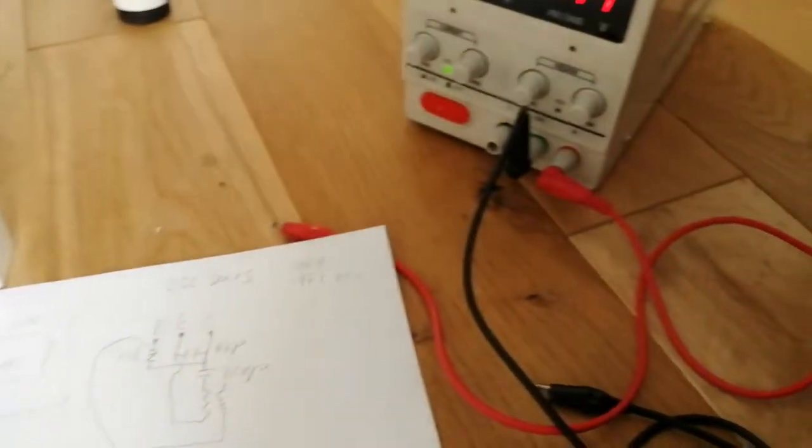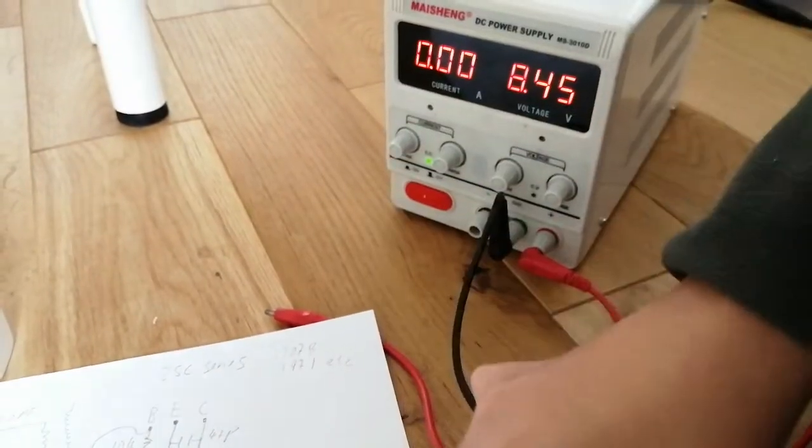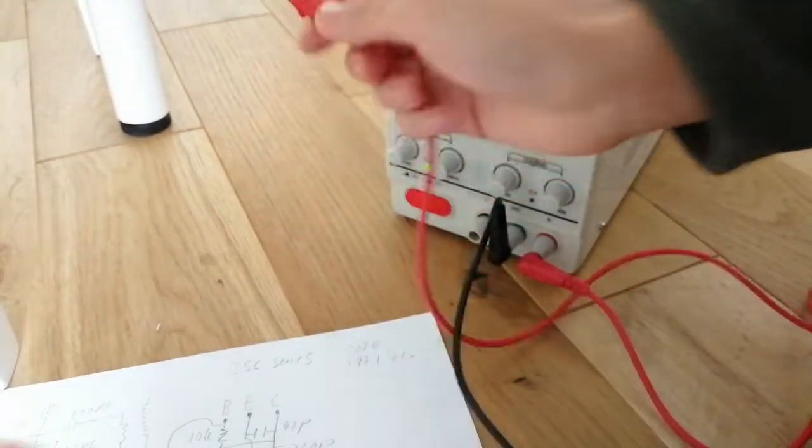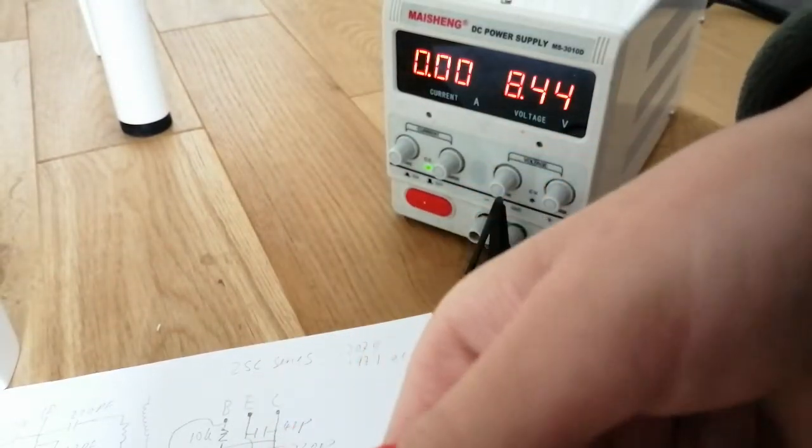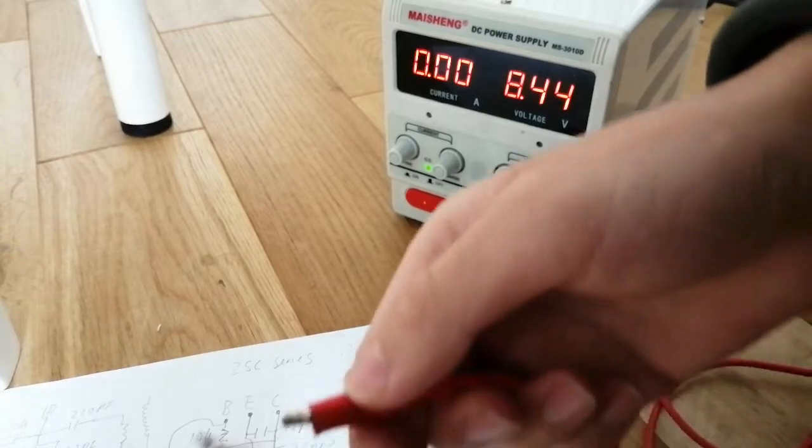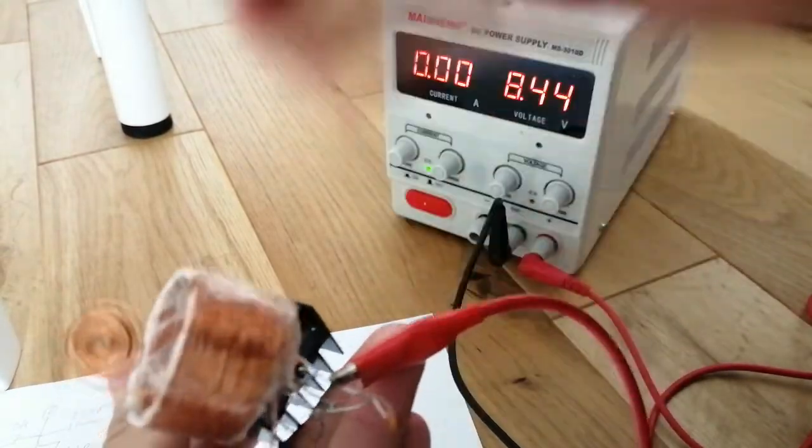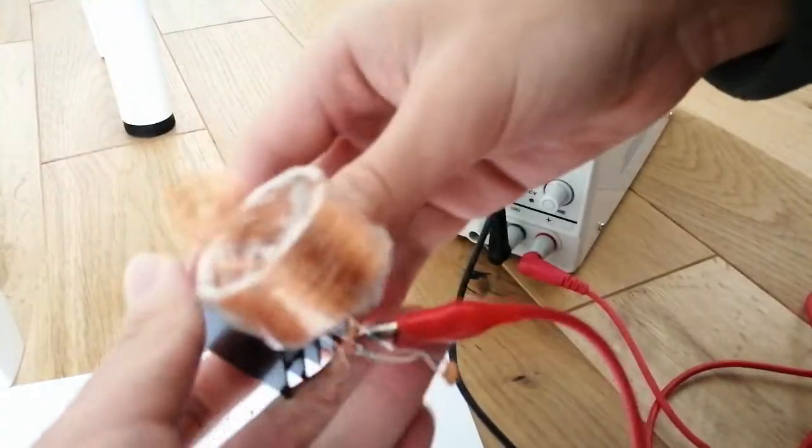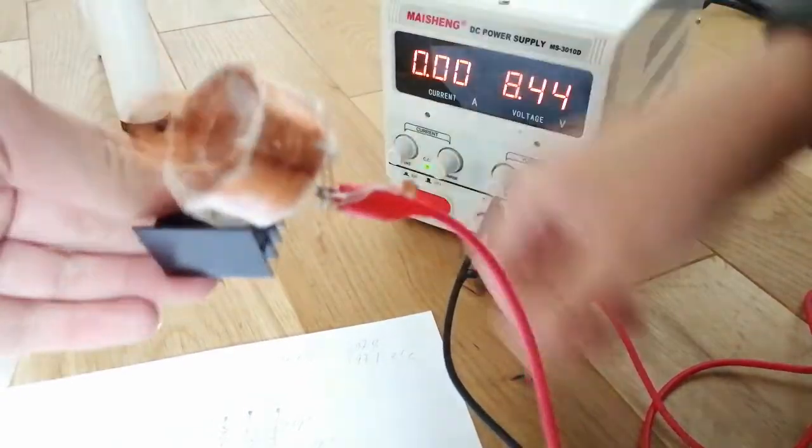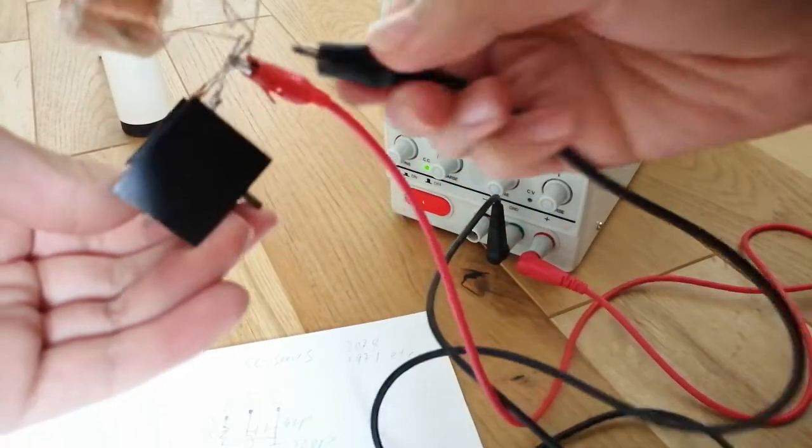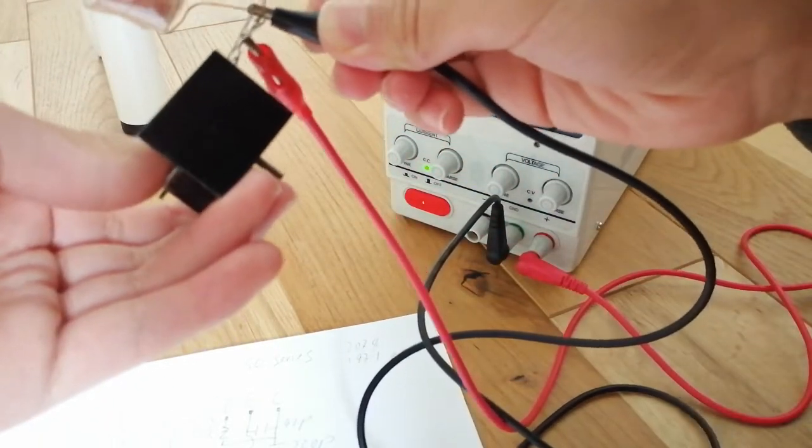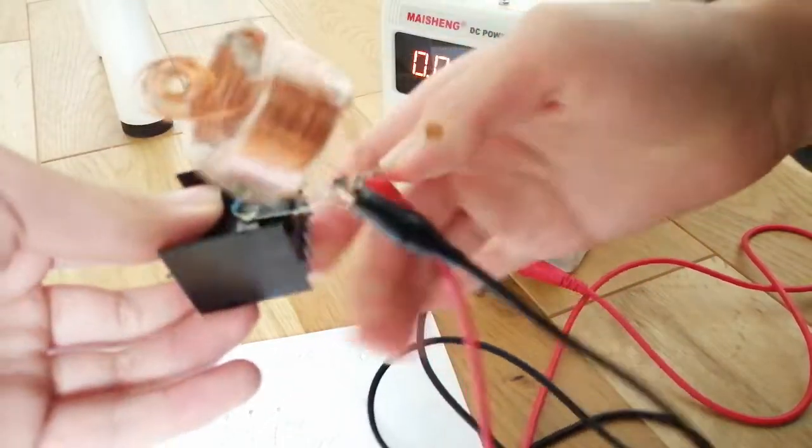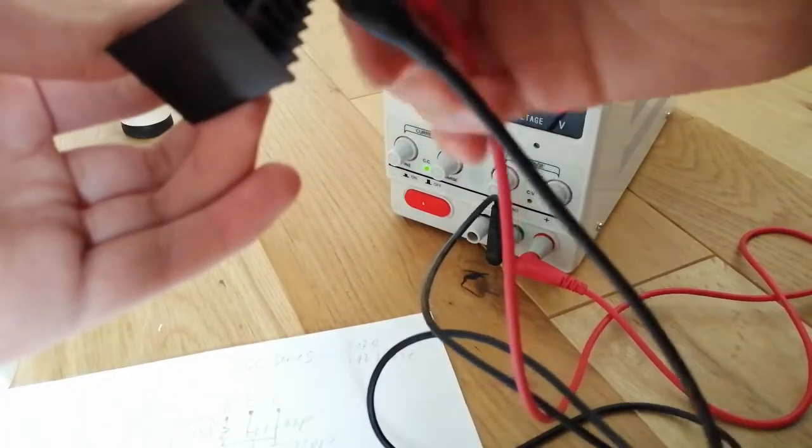To test the circuit, we'll be connected up to a power supply here. We connect the positive to the collector pin, which you can see here, and the negative to the emitter pin. This circuit is now, in theory, oscillating.